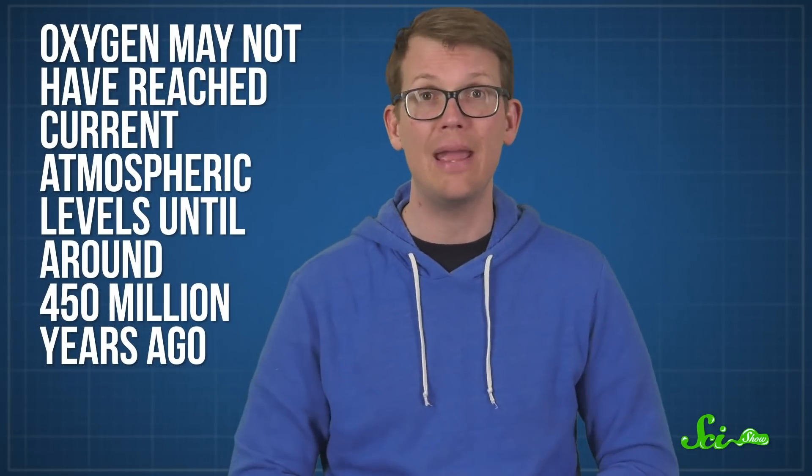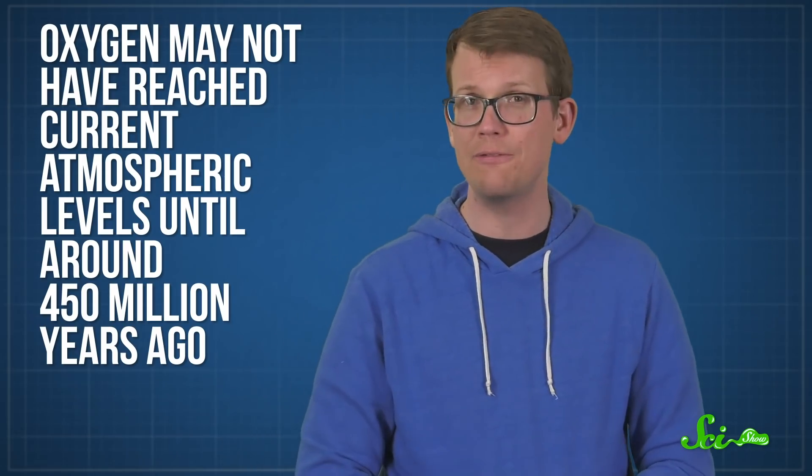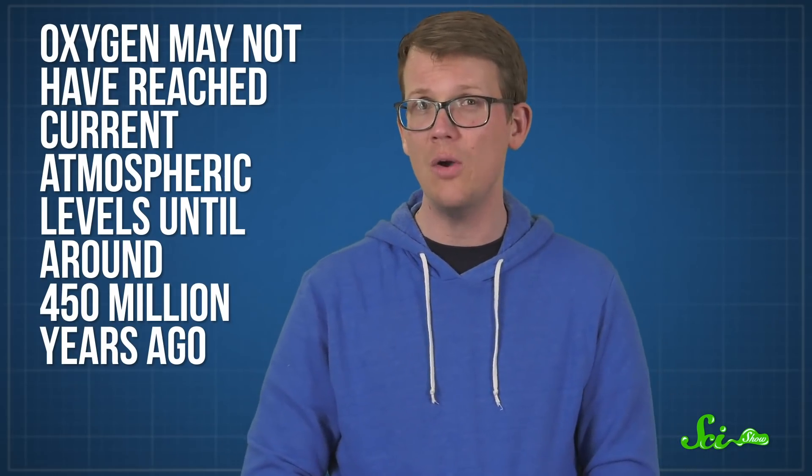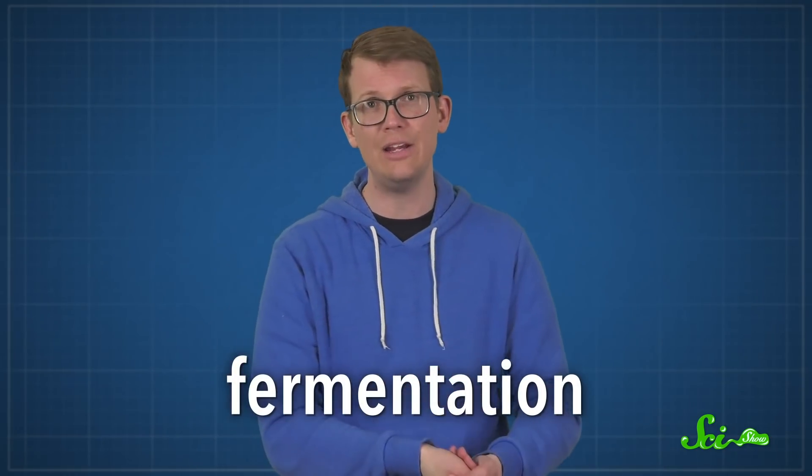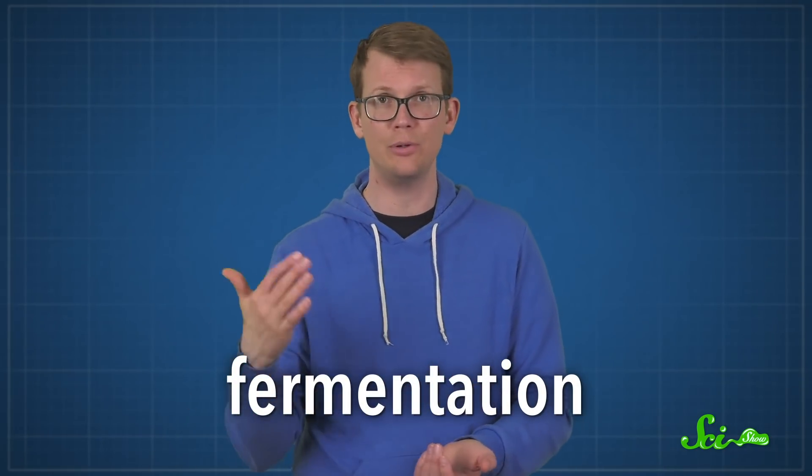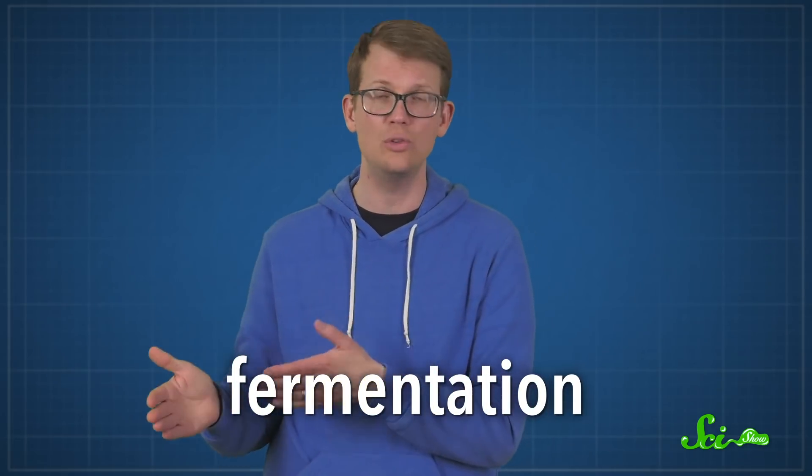But some eukaryotes developed ways to generate energy that do not rely on oxygen. Now that makes sense, because oxygen may not have reached current atmospheric levels until around 450 million years ago. So ancient eukaryotes needed to develop alternate ways of creating energy. Today, there are still eukaryotes adapted to living in areas with low or no oxygen, like the bottom of the ocean or the digestive systems of some animals. These organisms mostly rely on fermentation, which is a less efficient way to produce ATP, by breaking down sugars into CO2 and hydrogen.